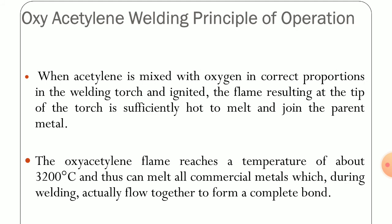The principle of operation used in oxy-acetylene welding is: when acetylene is mixed with oxygen in the correct proportion in the welding torch and ignited, the resulting flame at the tip of the torch is sufficiently hot to melt and join the parent metal. The temperature achievable with this process is around 3000°C, generally 2500°C. Three different types of flames representing different temperatures are used for welding or cutting different types of materials according to requirement.